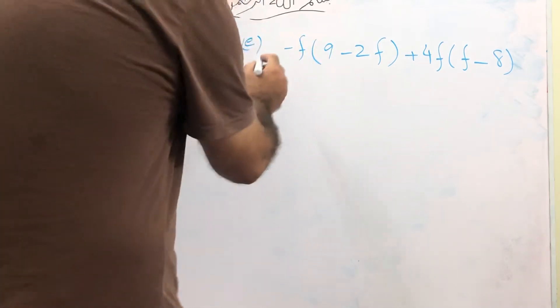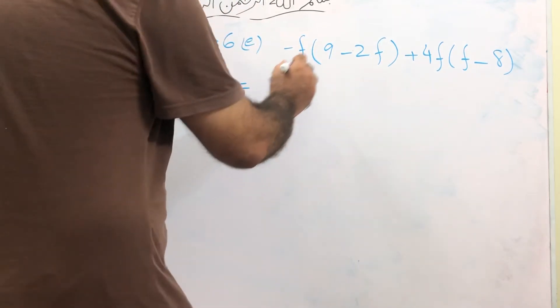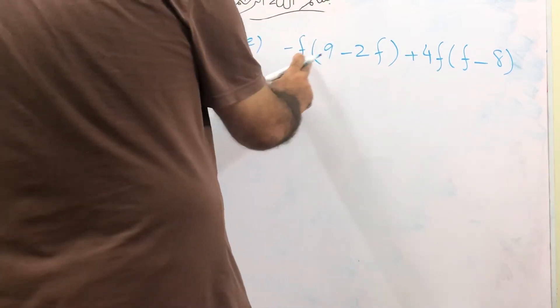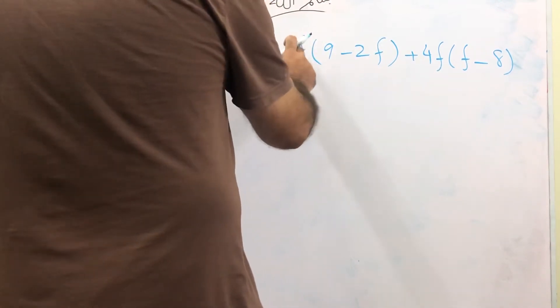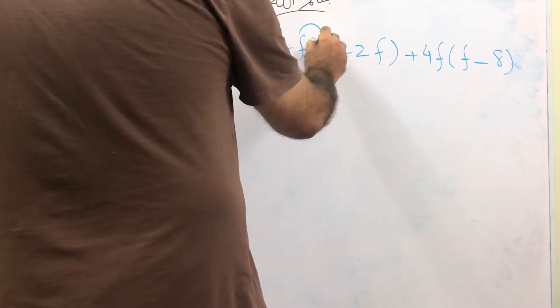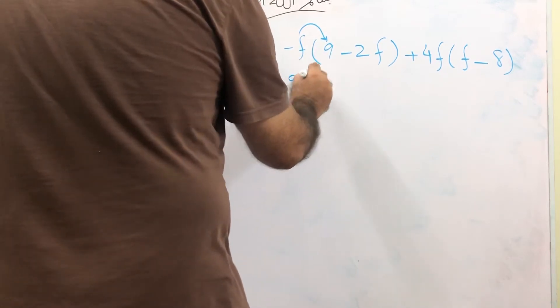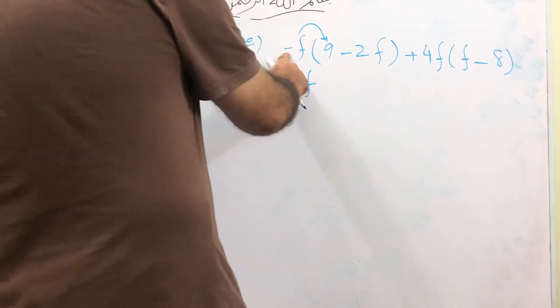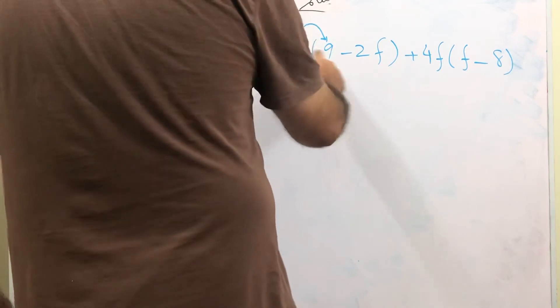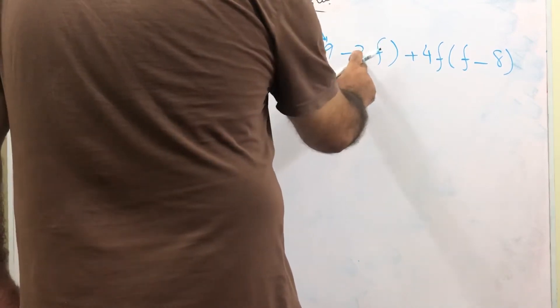So we will just start by opening the brackets. Here minus f will be multiplied inside. When it multiplies with this it becomes minus 9f. Then minus f will be multiplied with minus 2f. Minus minus plus 2f square.